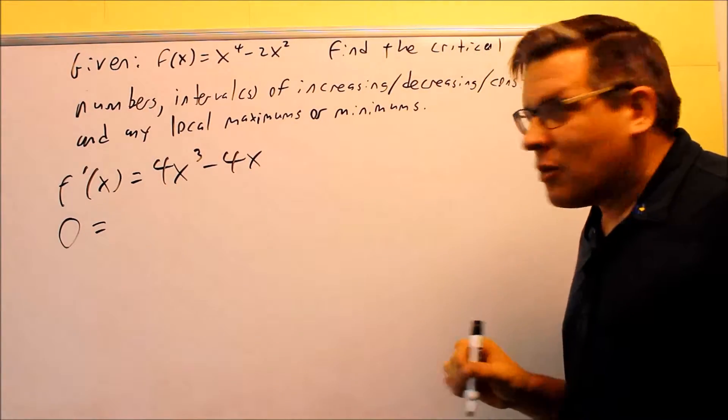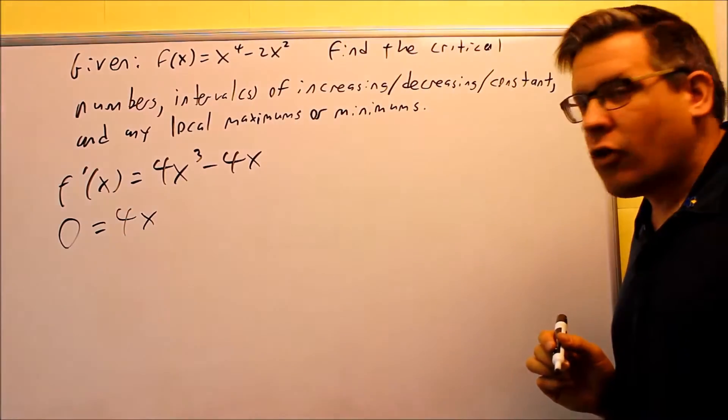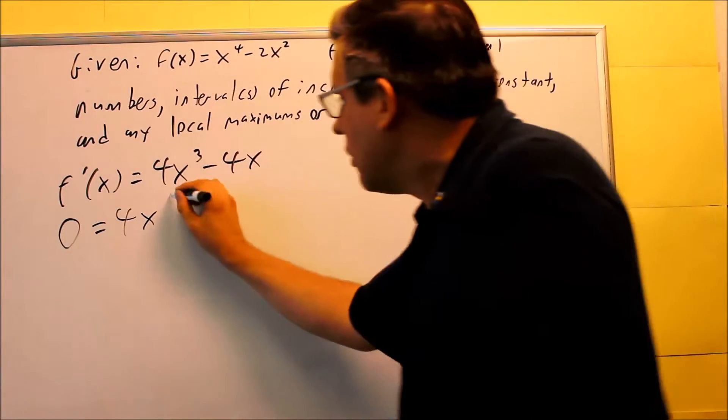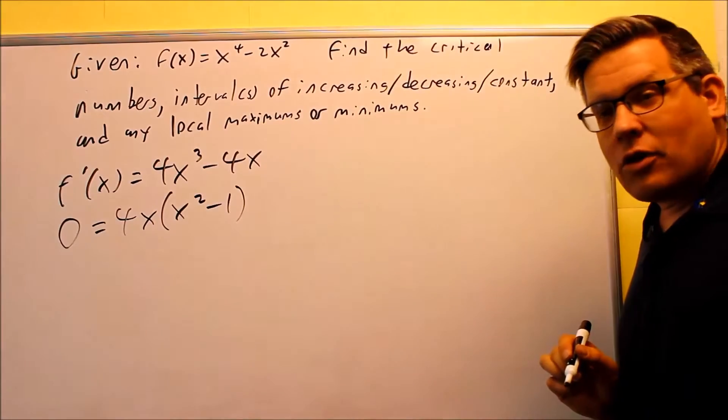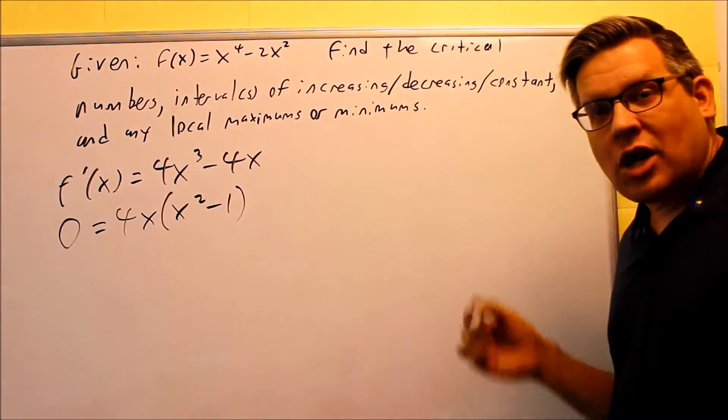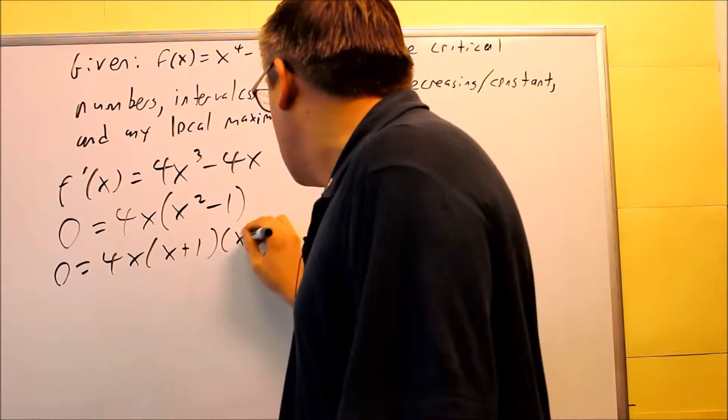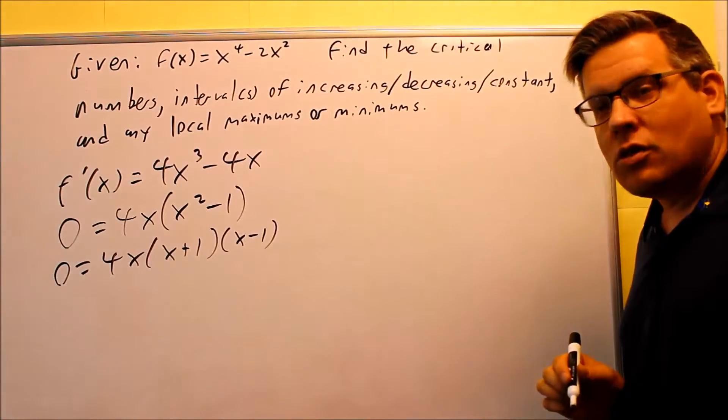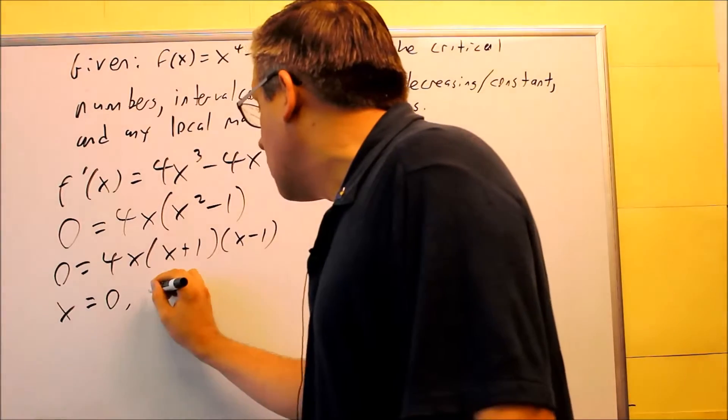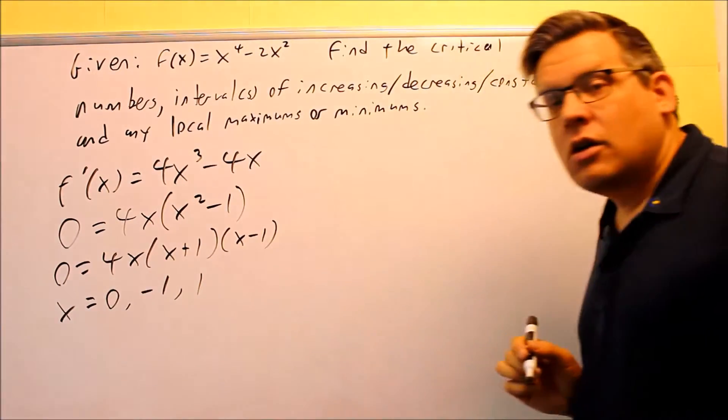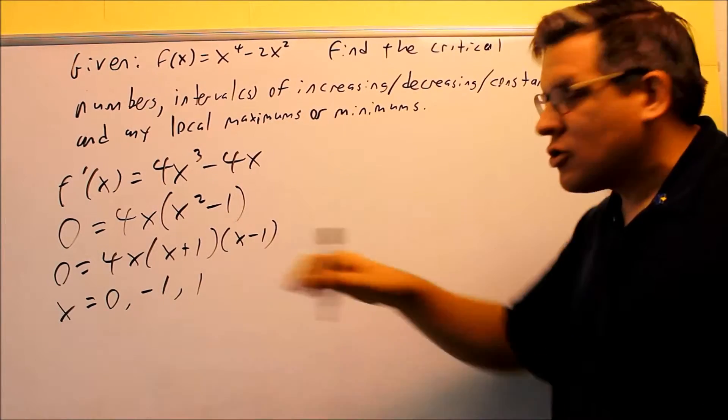So this one, we can take out a common factor, four, and we can also take out the smallest power of x, so 4x is your common factor there. Then that's going to leave us with x squared minus one when we factor it. But this part here can be factored one more time, difference of squares. So we're going to do x plus one, x minus one. So now this is fully factored. We'll set each individual part equal to zero, and you're going to get zero, negative one, and one as your critical numbers. So that was all the first step.